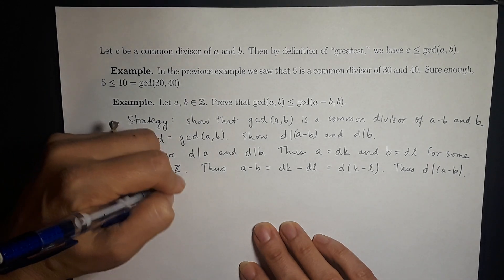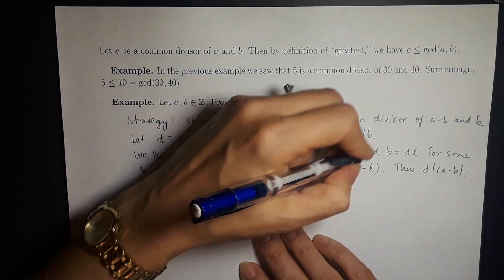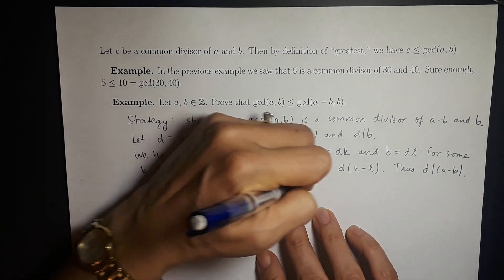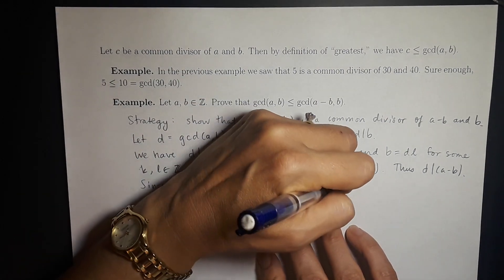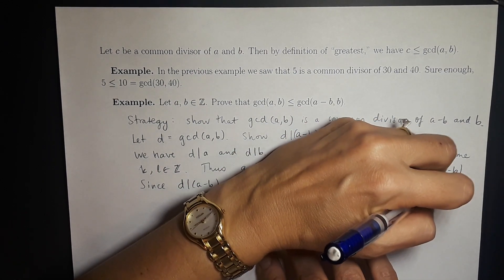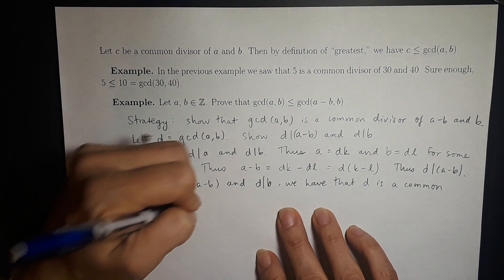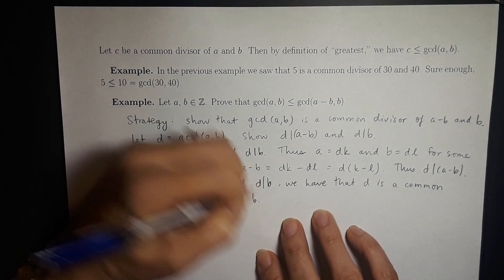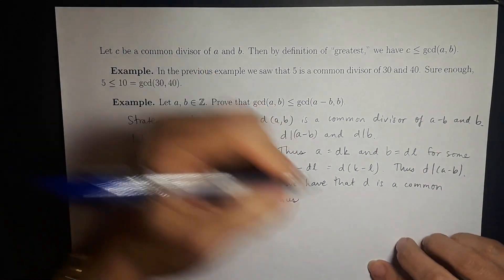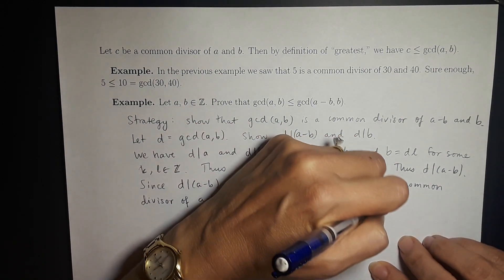So since D divides a minus b and D divides b, we have that D is a common divisor of a minus b and b. Thus, by our handy fact, D is less than or equal to the GCD of a minus b and b.